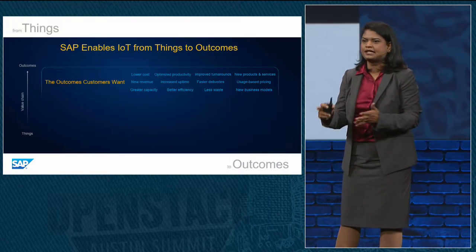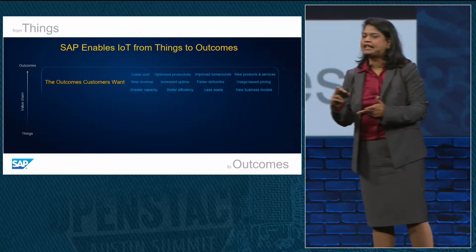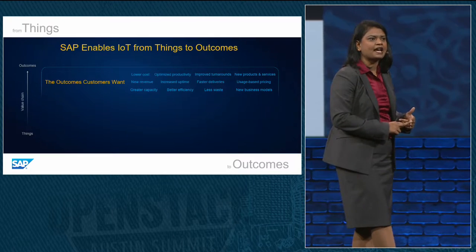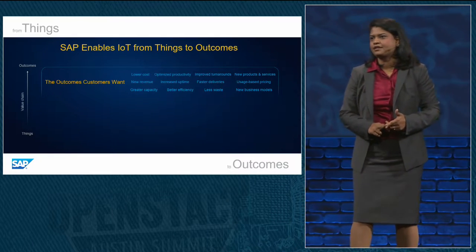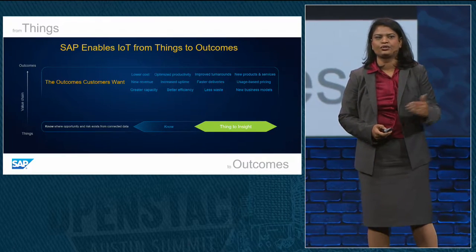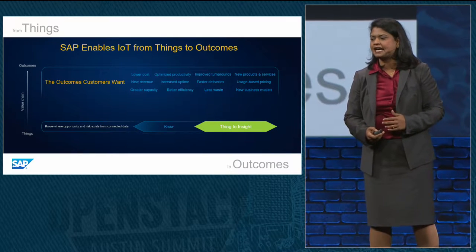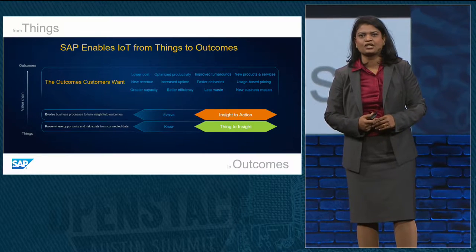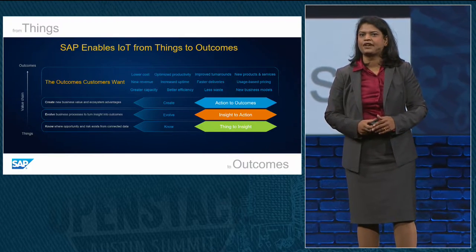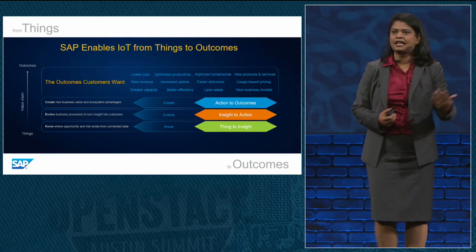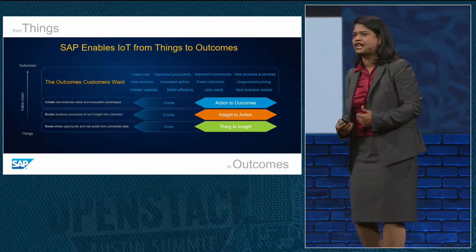They really care about outcomes like net-new customer experiences, net-new revenue models, reducing turnaround times, or reducing maintenance times. And to get to these outcomes, it's a journey — how they connect the things to get the insights. The insights generate actions, and actions generate all of these outcomes. One of the key questions I get is: give me examples of customers that have really gone through this transformation and generated these outcomes.